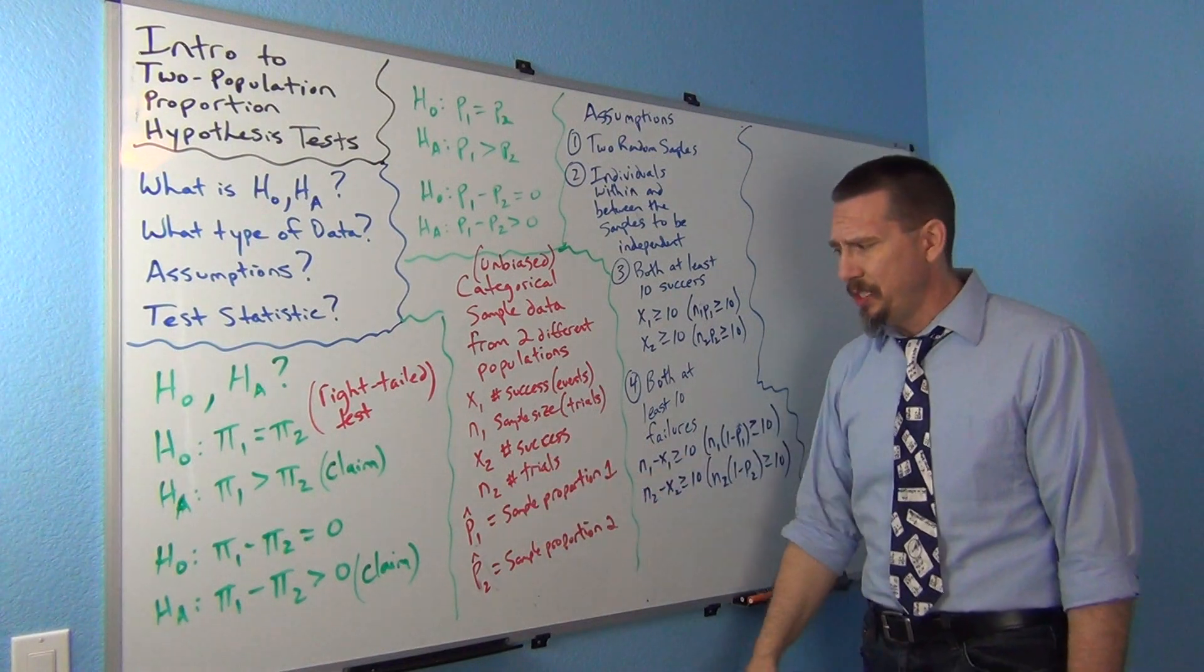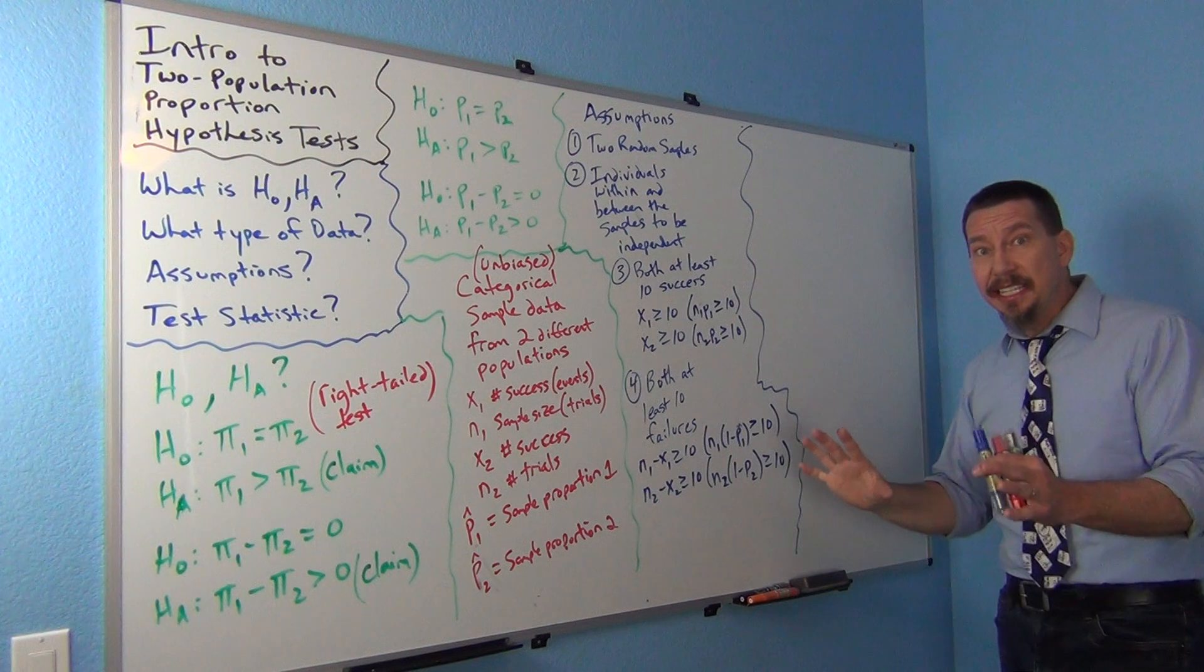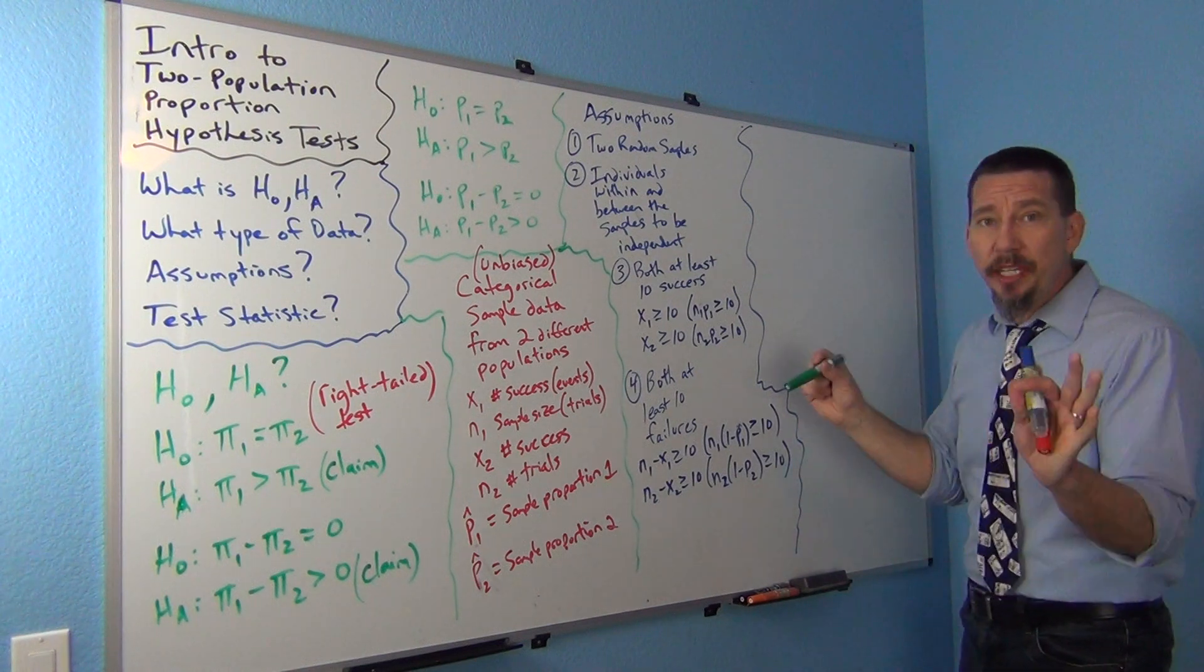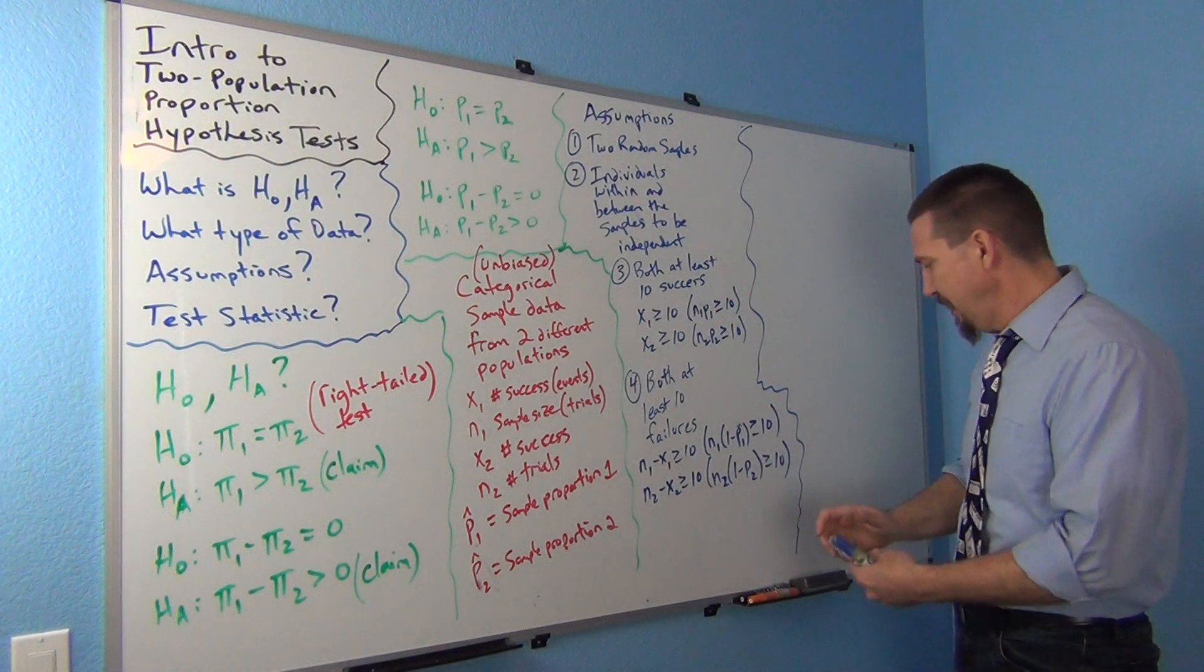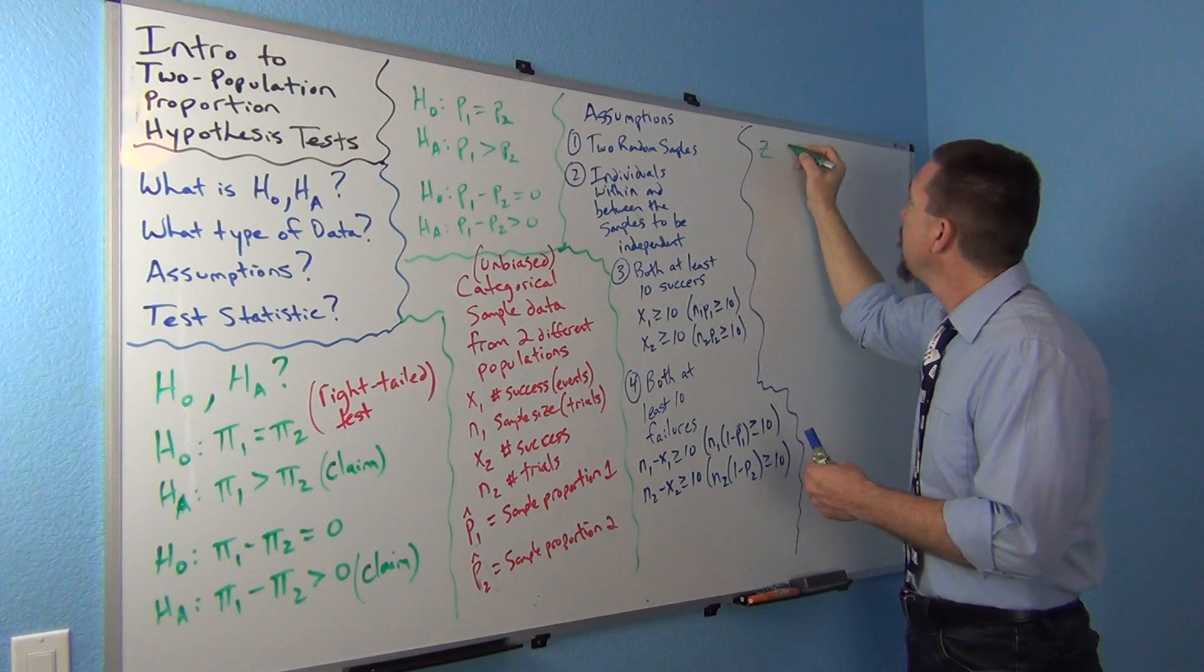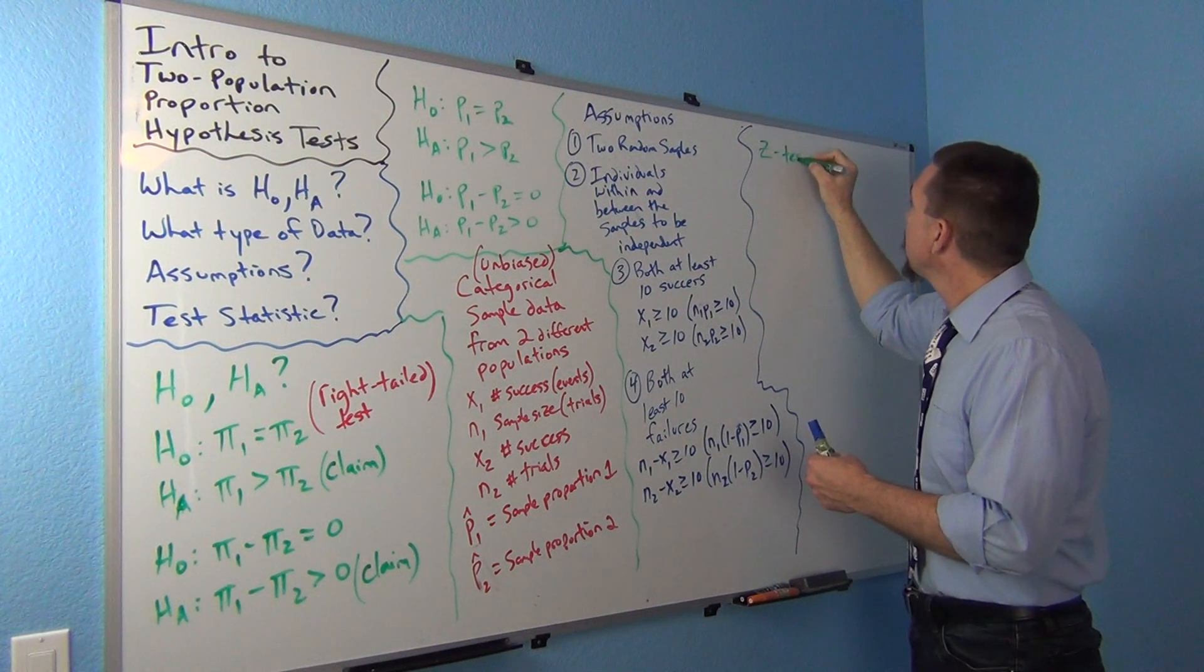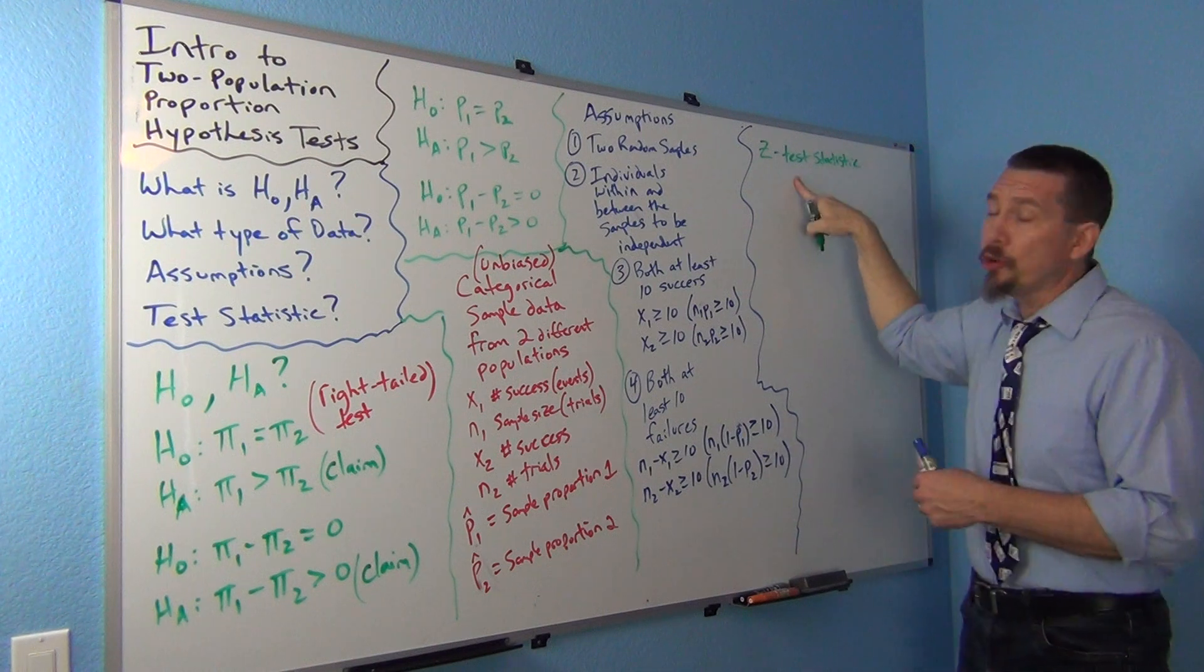Now, you can go, it doesn't have to be zero necessarily, I could have more advanced kinds of hypothesis tests, but the basic one is usually zero, and that's the one I'm kind of covering today. Okay, so, we're going to be using the Z test statistic, right? The Z test statistic. Same one we did for one population.